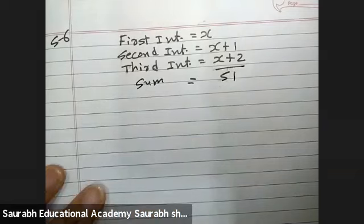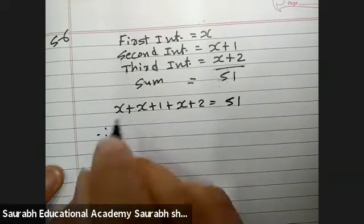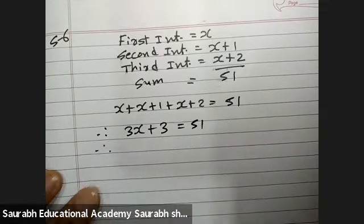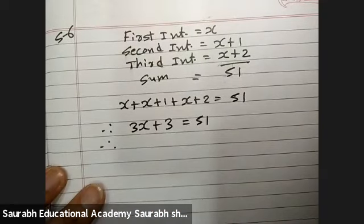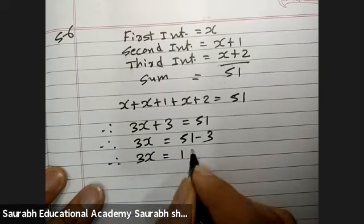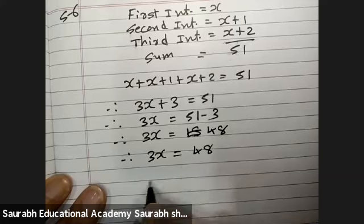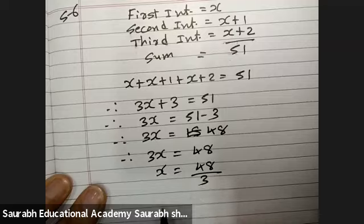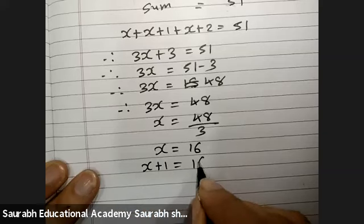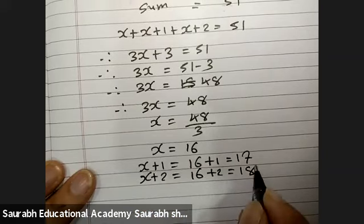Their sum is 51. So, let's make equation x plus x plus 1 plus x plus 2 equals 51. x plus x plus x is 3x, 1 plus 2 is 3. So, 3x equals 51 minus 3, 3x equals 48, x equals 48 upon 3. x equals 16. x plus 1 is 17, x plus 2 is 18.